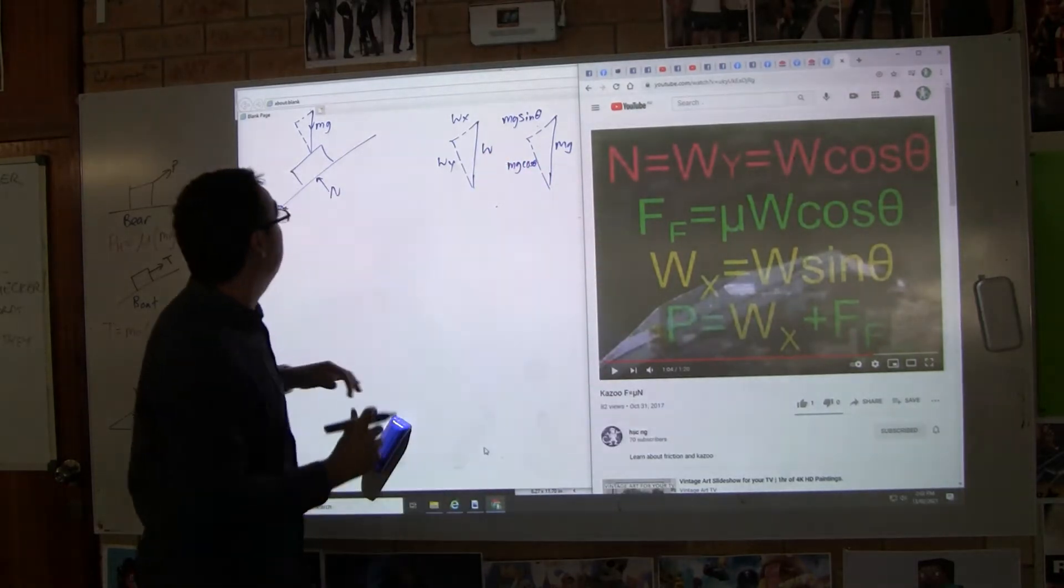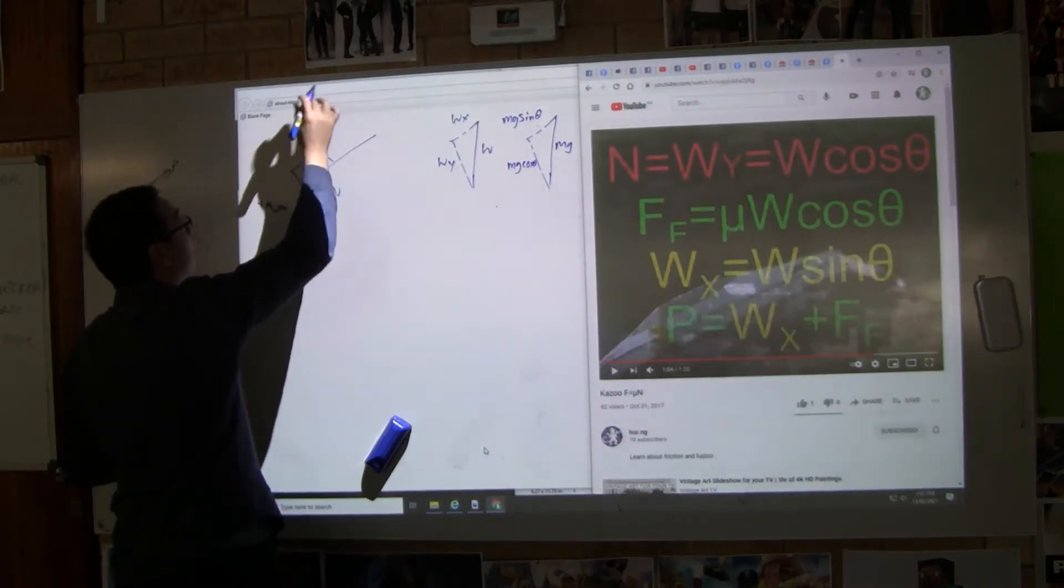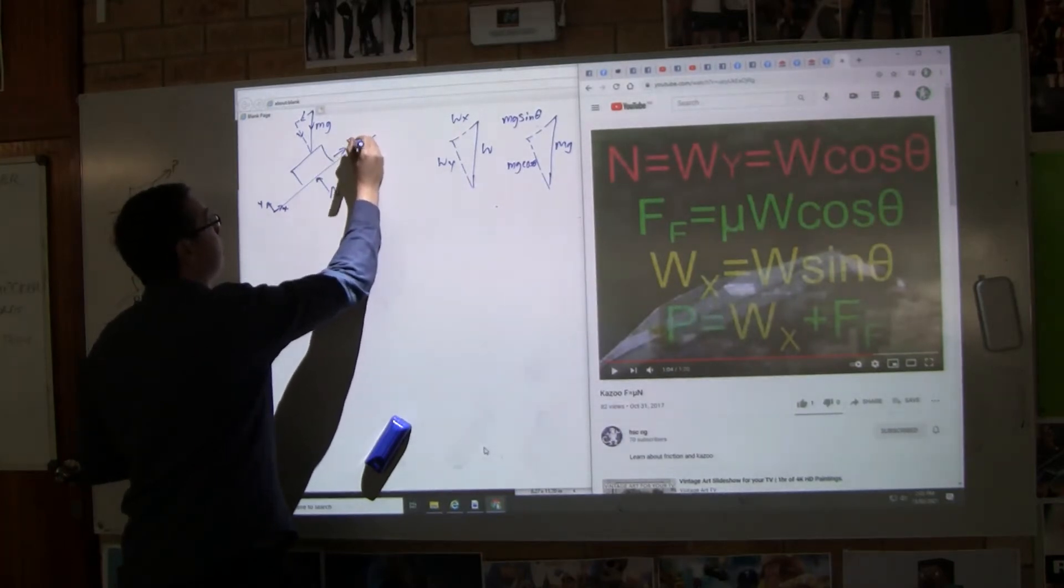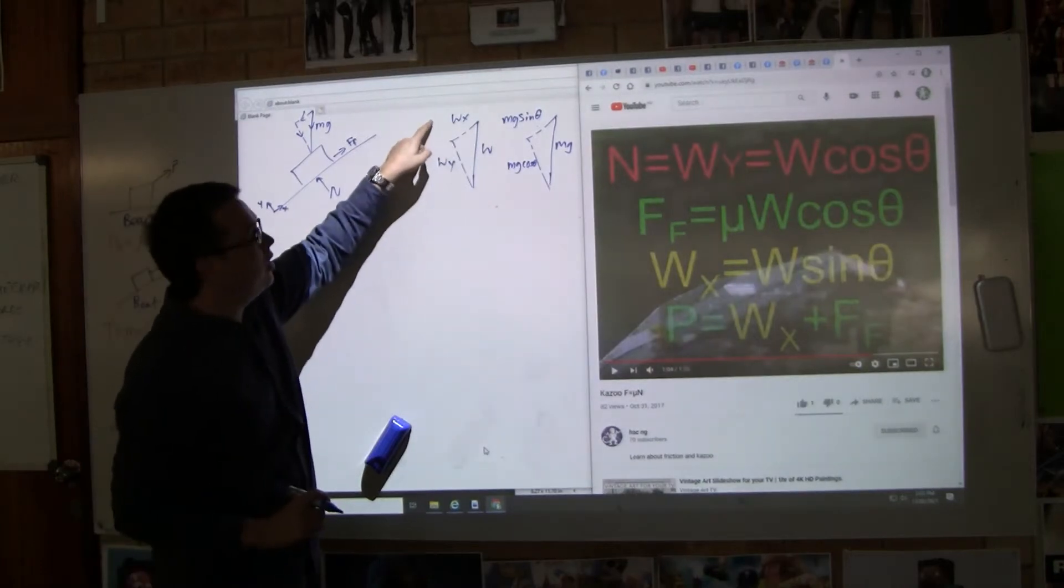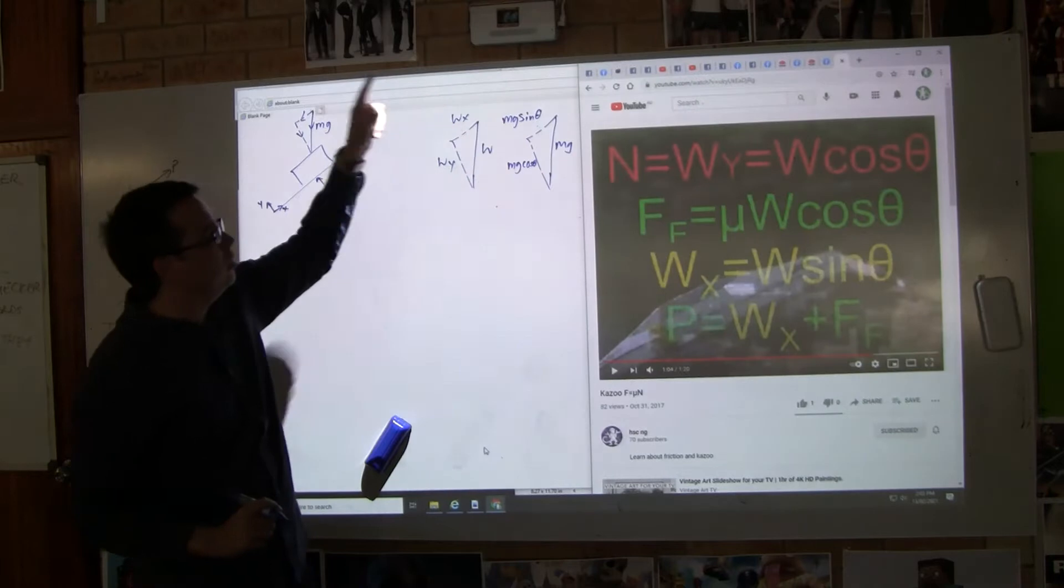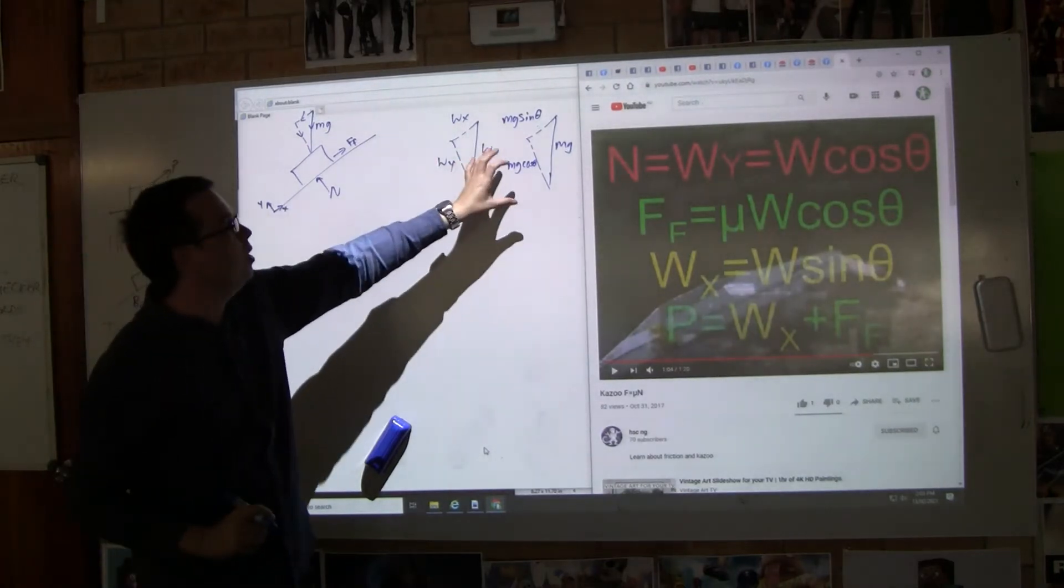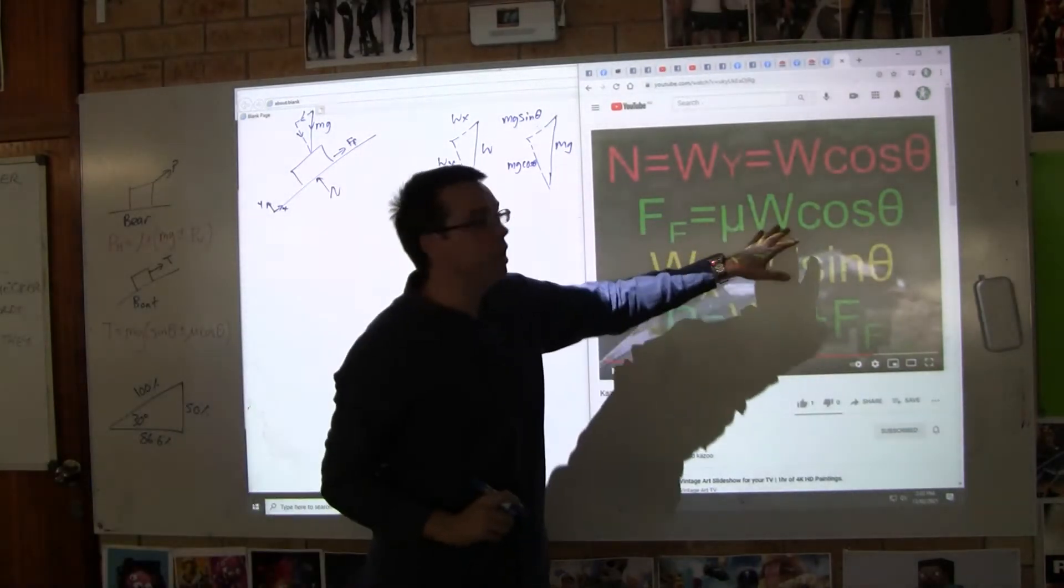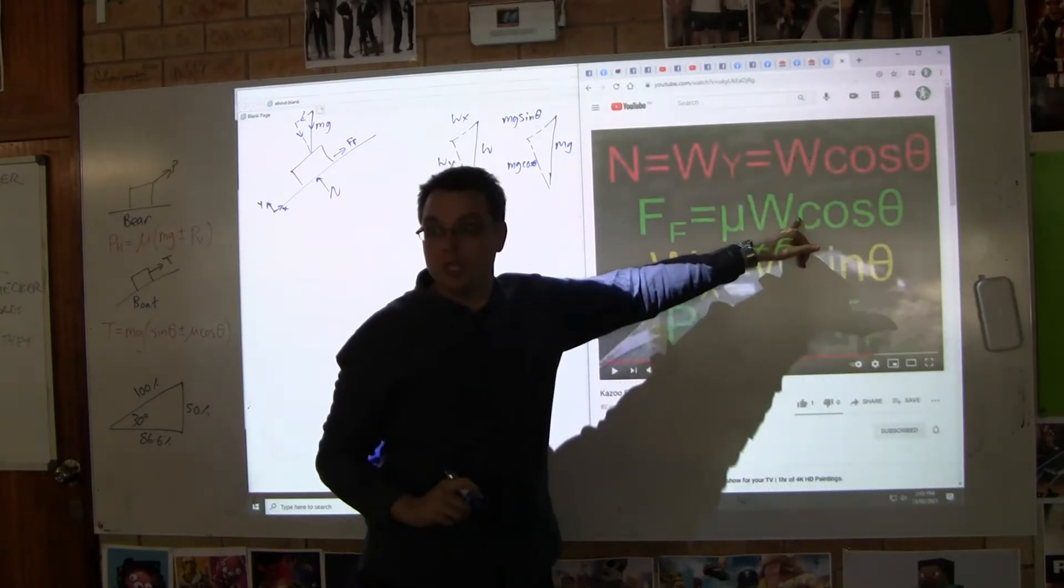For friction, the friction is going to resist this sliding. So this is going down, the only thing causing this to slide is WX. The friction value is F equals mu N. If we substitute N, we get F equals mu N.